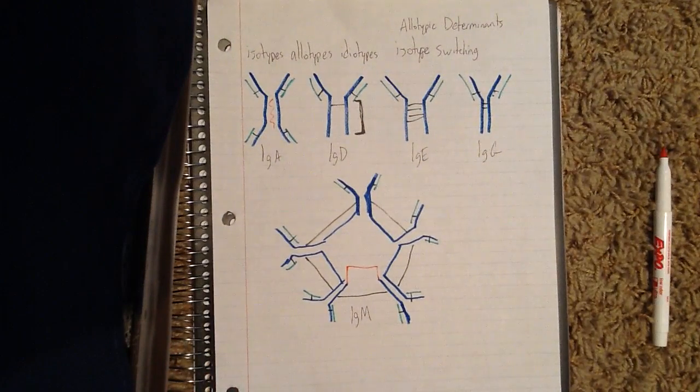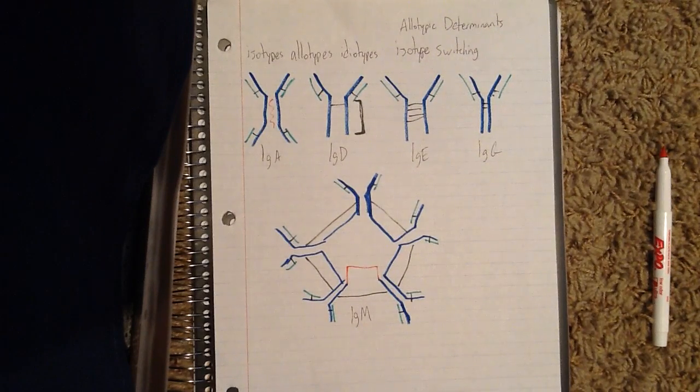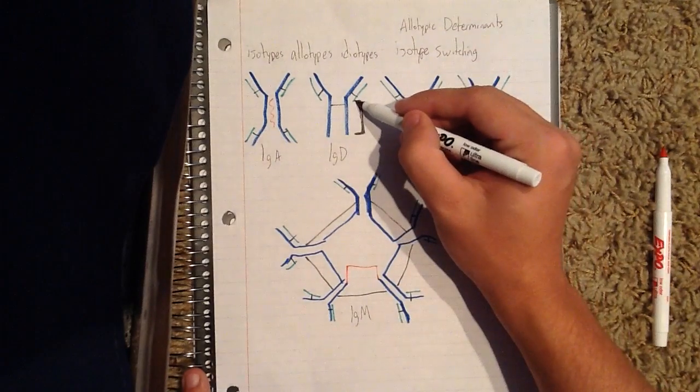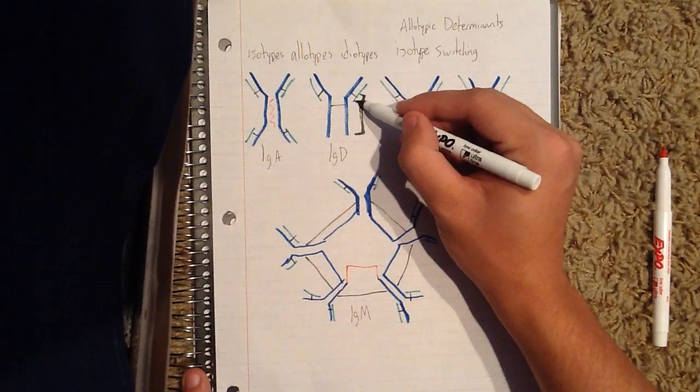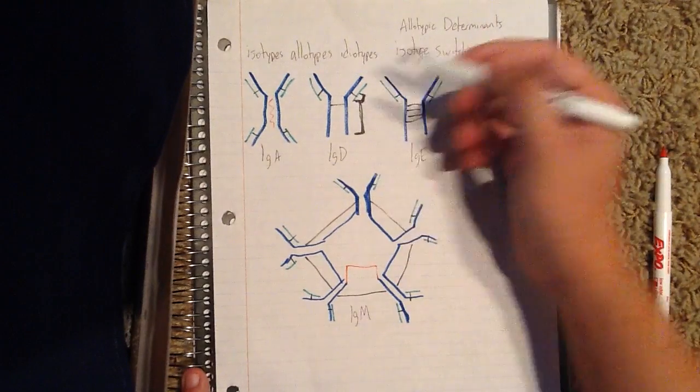An allotype is going to be a set of these allotypic determinants that are characteristic of some members of the species, but not all members of the species. These determinants of the allotypes are allele-specific. This means that in each individual, there are slight differences in the constant region in the light and heavy chains of the antibodies. We'll draw this a little bit more, because the constant region actually begins up here.